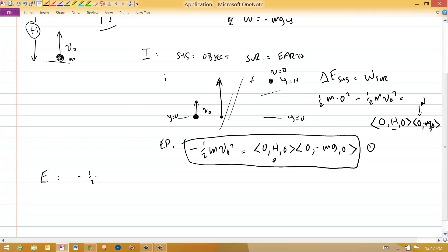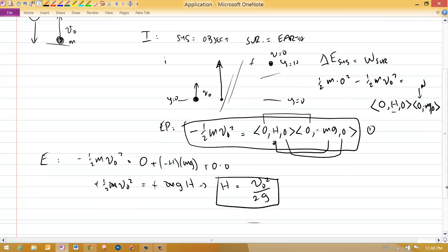I have minus 1 half m v0 squared is equal to, to do this dot product, 0 times 0, plus minus h times mg, plus 0 times 0. So I get minus 1 half m v0 squared is equal to minus mgh. And notice the m's cancel off, as it always will. The negatives will cancel. So I get that h is equal to v0 squared over 2g, which is an answer we've gotten in many different varieties, many different guises.